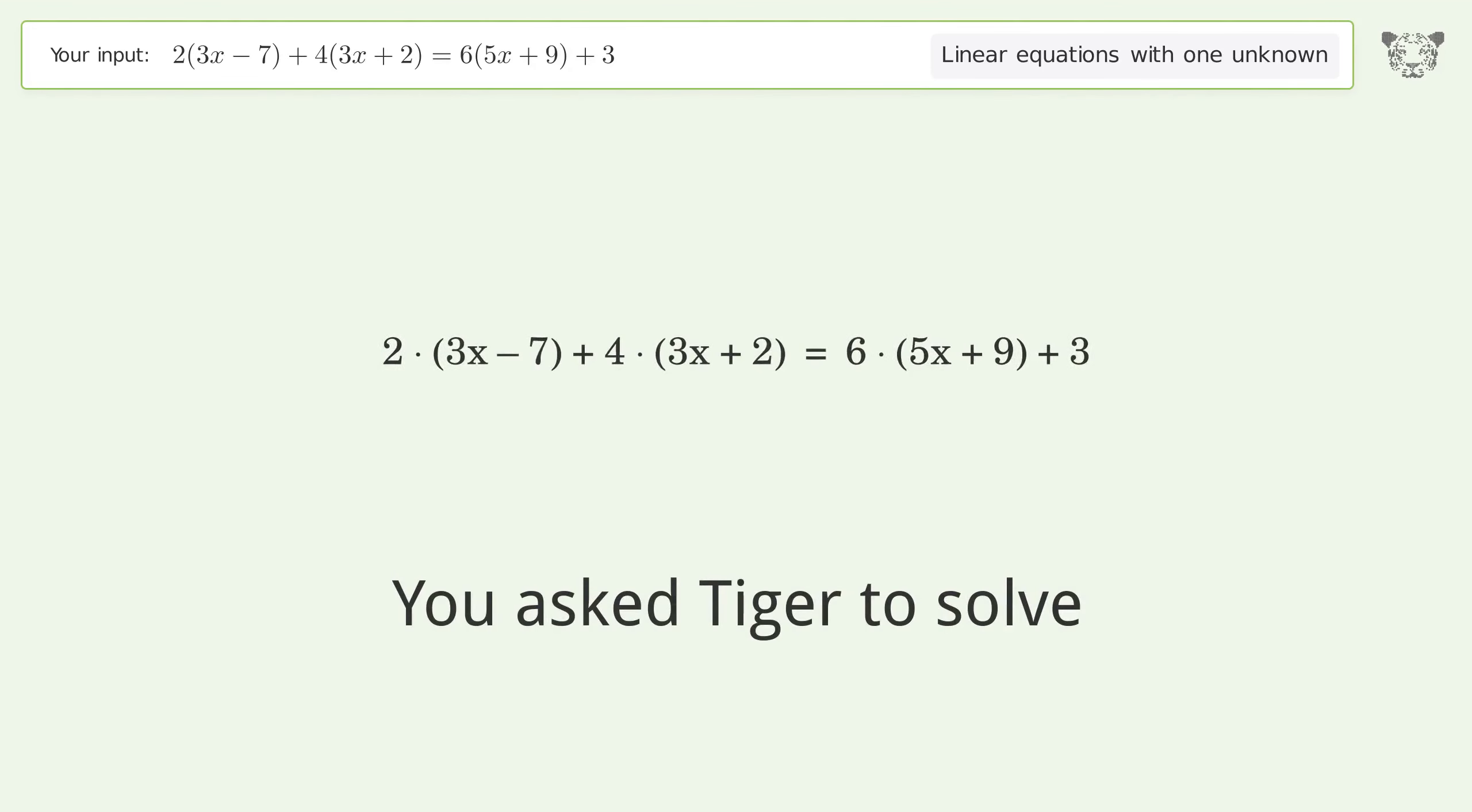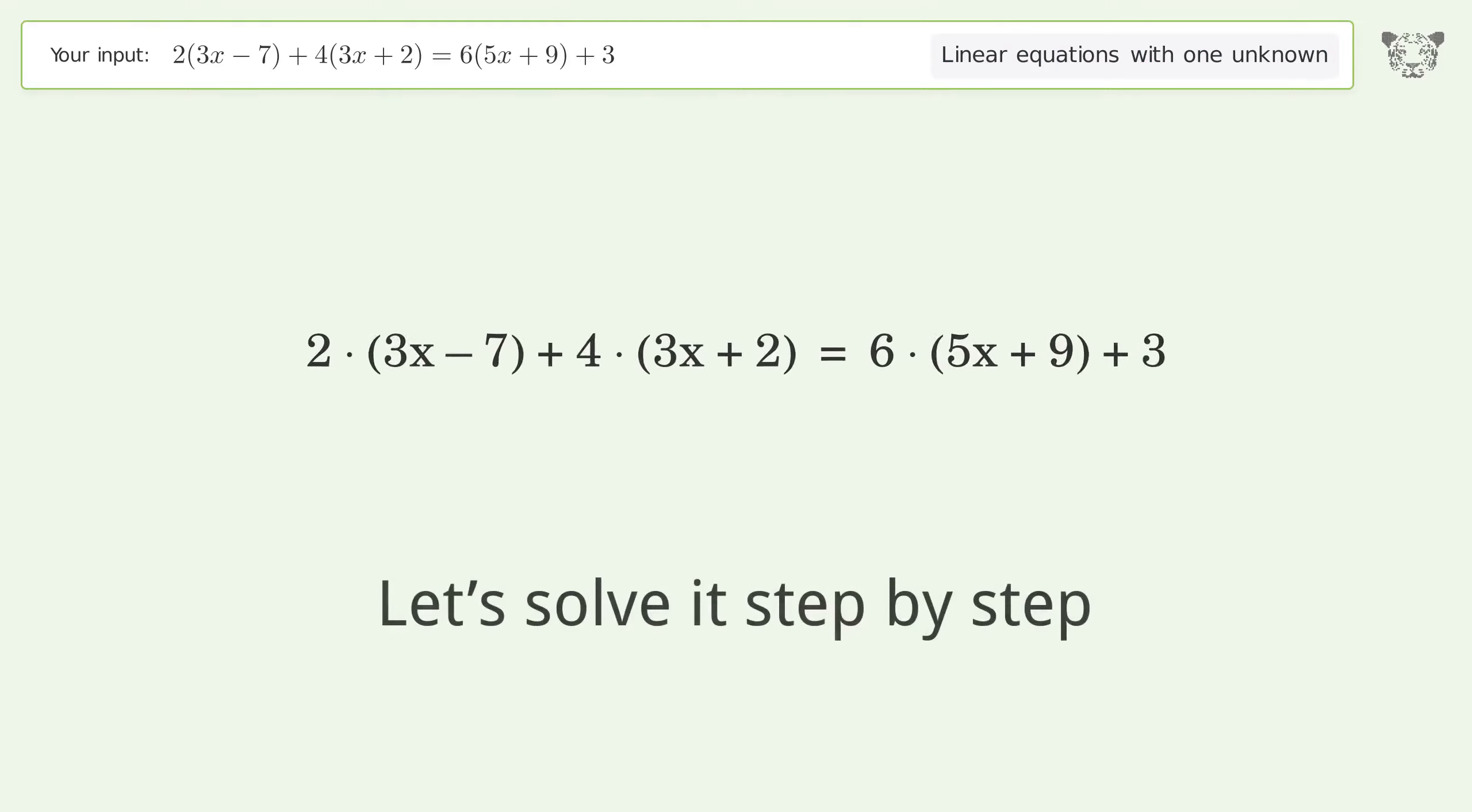You asked Tiger to solve this. This deals with linear equations with one unknown. The final result is x equals negative 21 over 4. Let's solve it step by step.